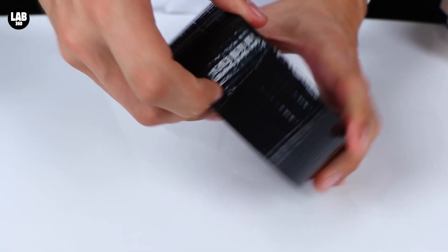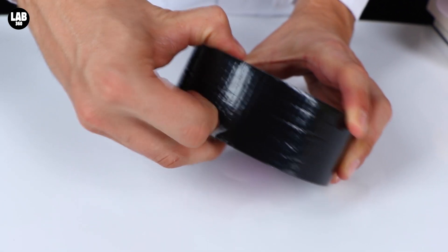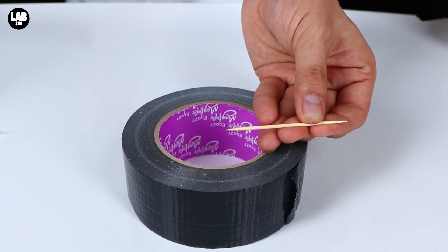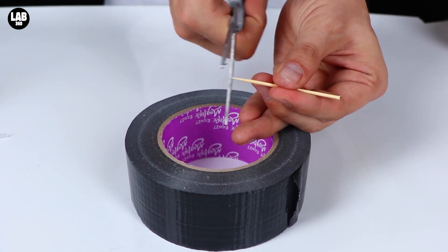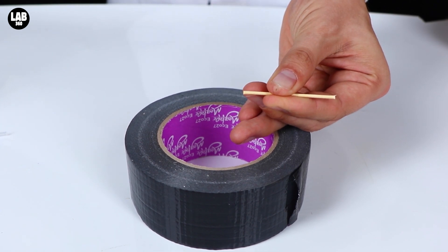Number eight. The tape toothpick. Simply trim the edges off of a toothpick and use it to save your place on a roll of tape. That saves a lot of frustration.